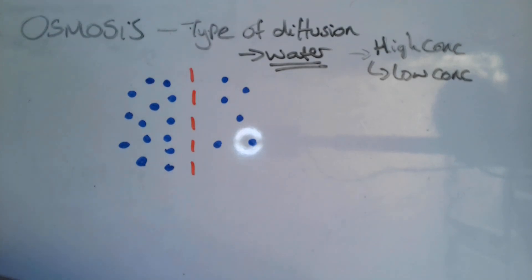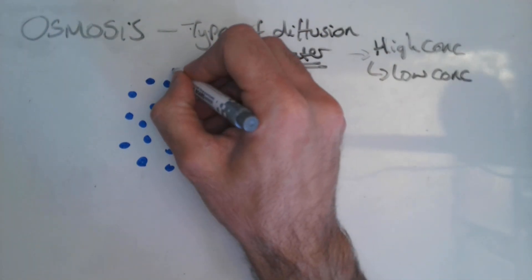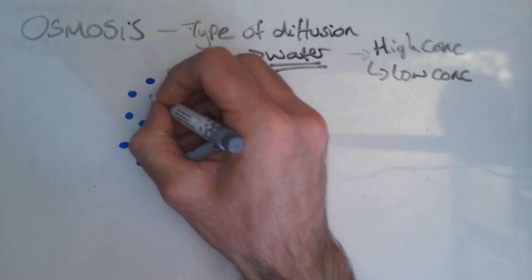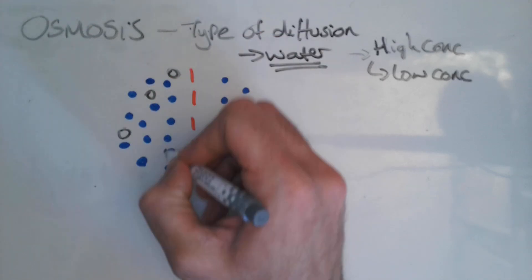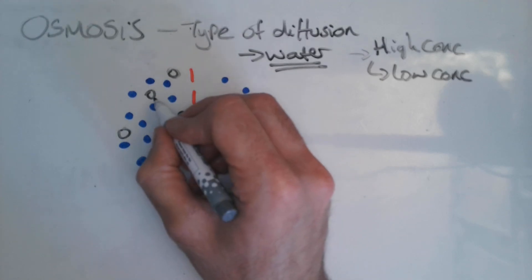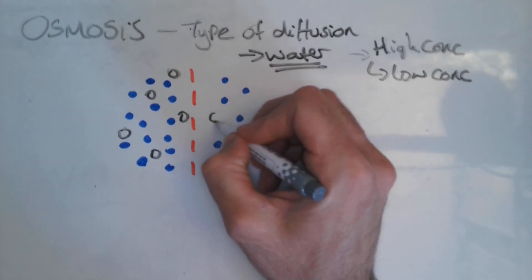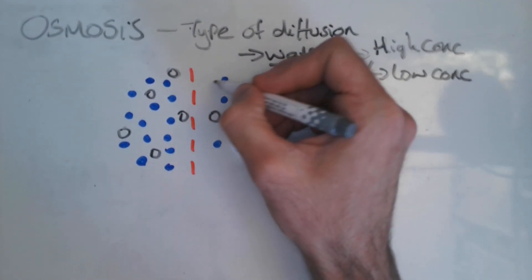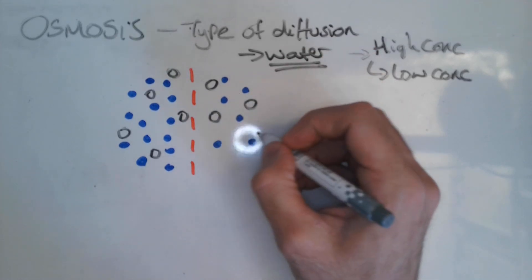What I might also have is some solutes, substances that are dissolved in my water like so. So here I've still got a high concentration of water in comparison to the solutes, but here I've got a lower concentration of water in comparison to my solutes.